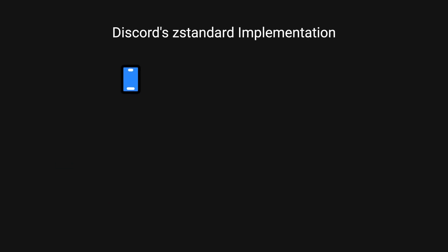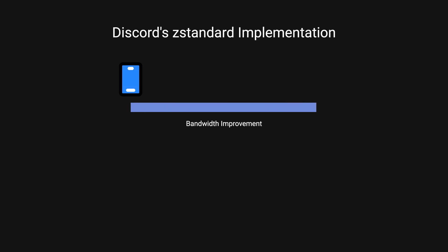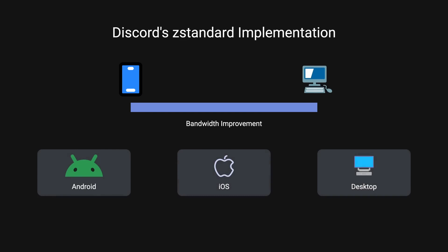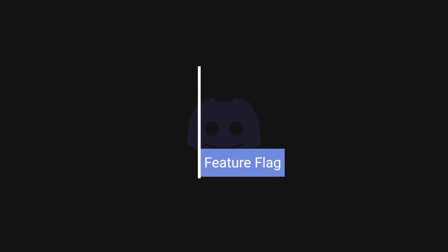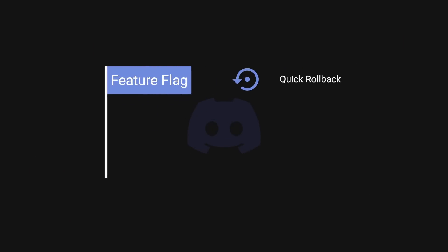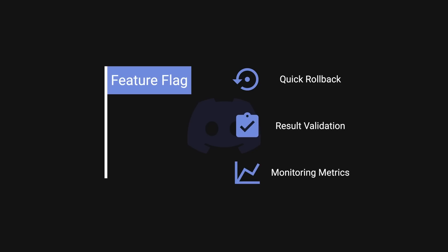Although initially planned for mobile users, the significant bandwidth improvements led Discord to implement ZStandard for desktop users as well. This involved finding and integrating appropriate ZStandard bindings for each platform: Java for Android, Objective-C for iOS — they also had to write their own bindings — and Rust for desktop. Recognizing the potential risk of such a big change, Discord implemented the rollout behind a feature flag. This approach served three purposes: allow for quick rollback if issues arose, help validate the results observed in testing, and enable monitoring and baseline metrics to ensure changes weren't negatively impacting user experience.